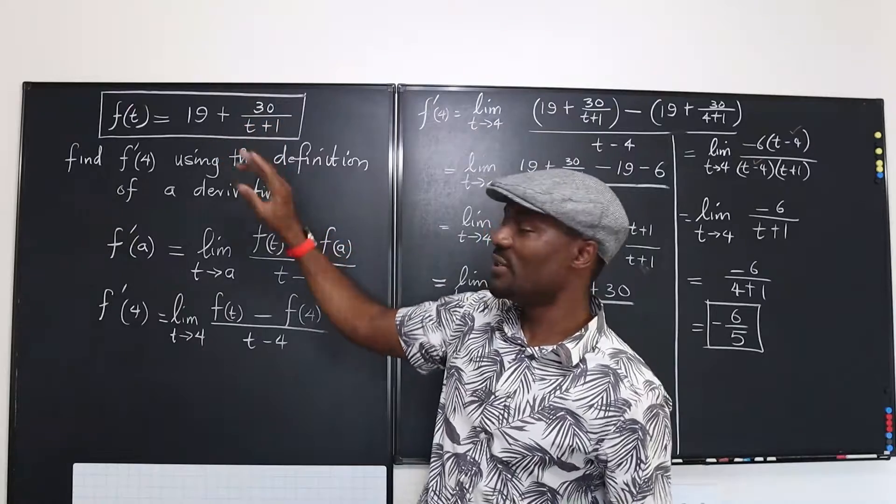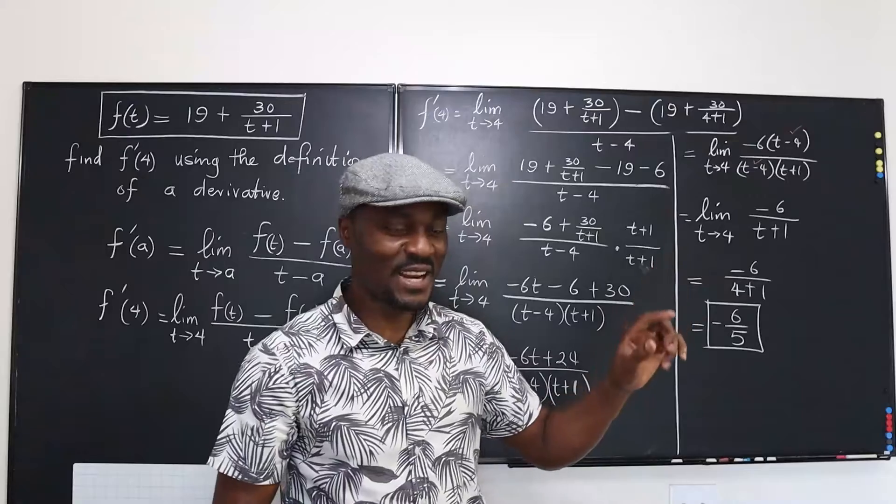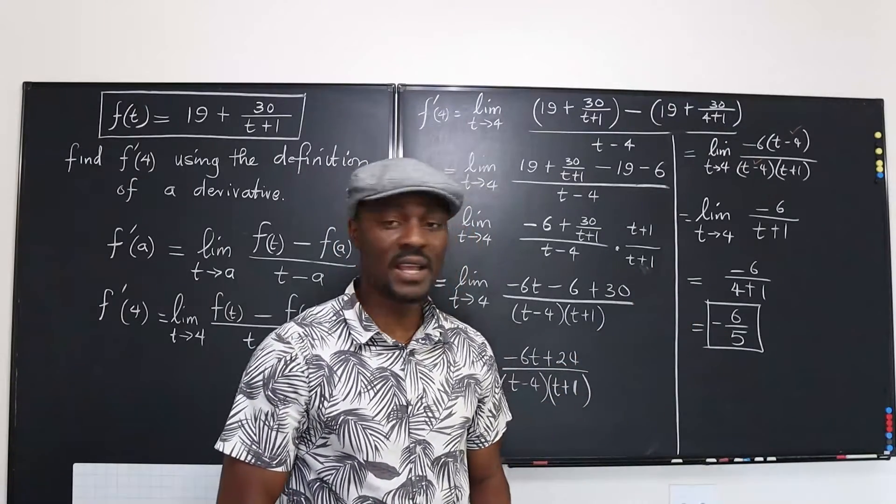So negative 30 divided by t plus 1, quantity squared, where t is 4, it becomes 25, so that's negative 30 over 25. If you simplify, you're still going to get negative 6 over 5.